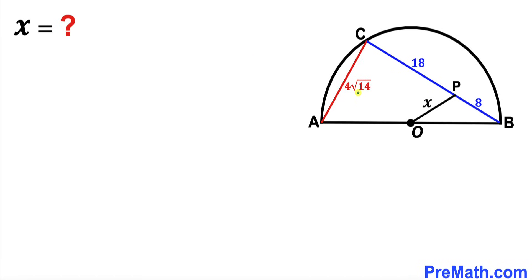Welcome to pre-math. In this video we have a triangle ACB fully inscribed in a semicircle with center O, such that its side length AC is 4 times the square root of 14, the line segment CP is 18, and the line segment PB is 8. Our task is to calculate the value of x, which represents the line segment OP.